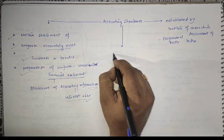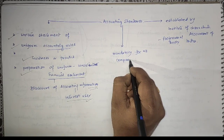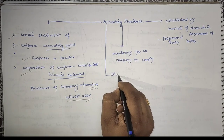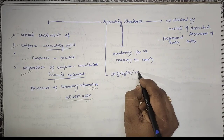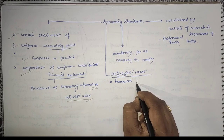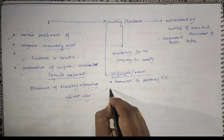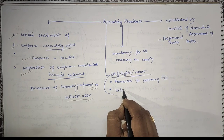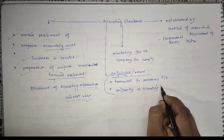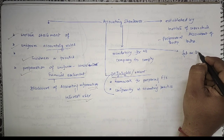When it comes to accounting standards, it is mandatory for all companies to comply. These accounting standards have some highlights, or nature. They act as a framework for preparing financial statements, and their main objective is to bring uniformity in accounting practice. Accounting standards act as a dictator in accounting.